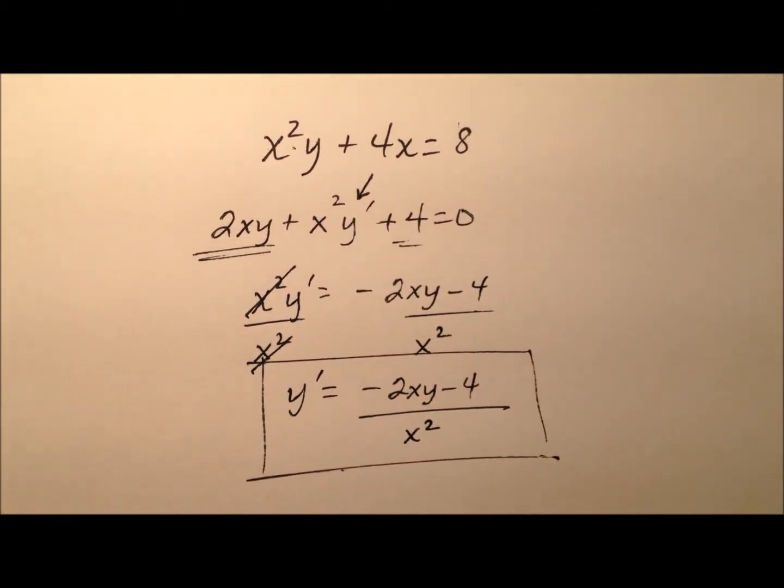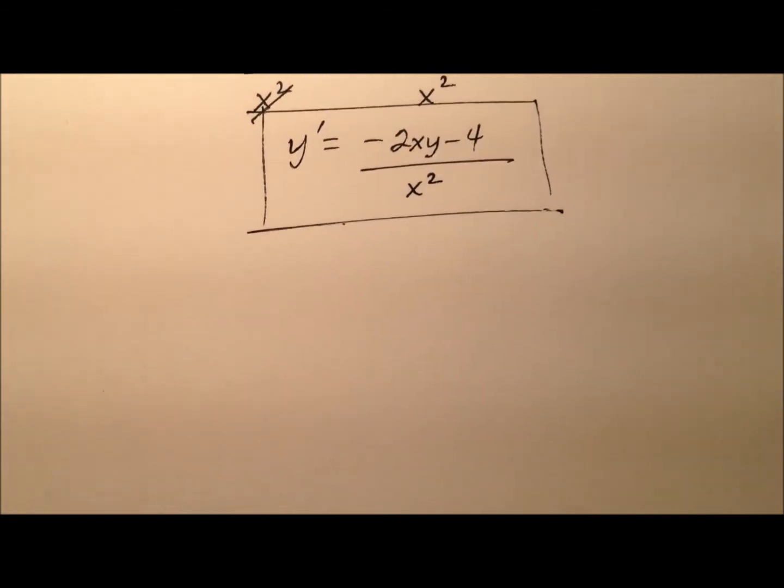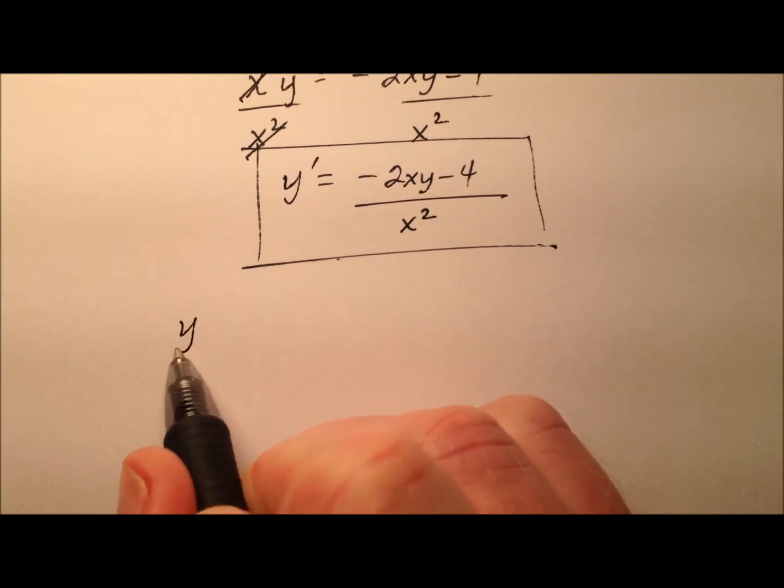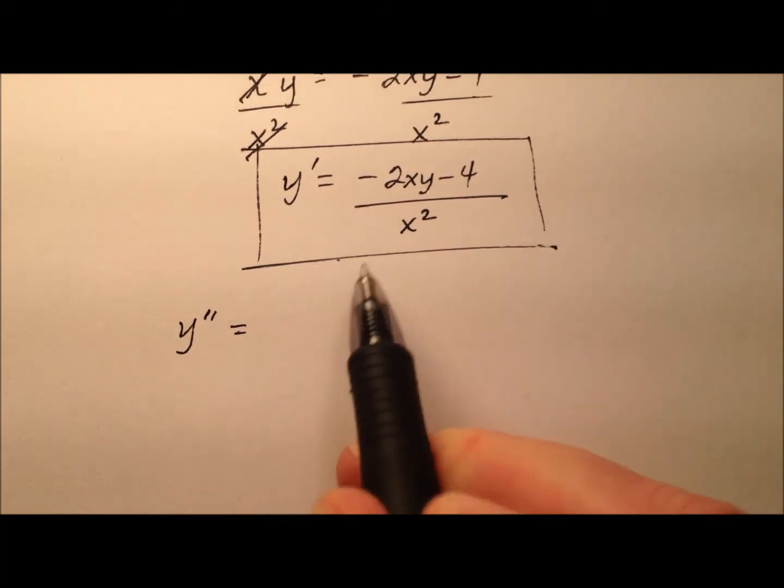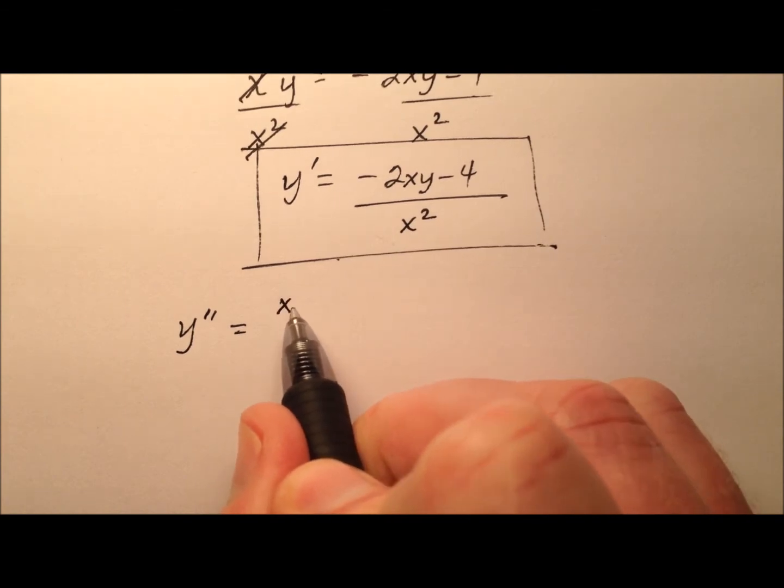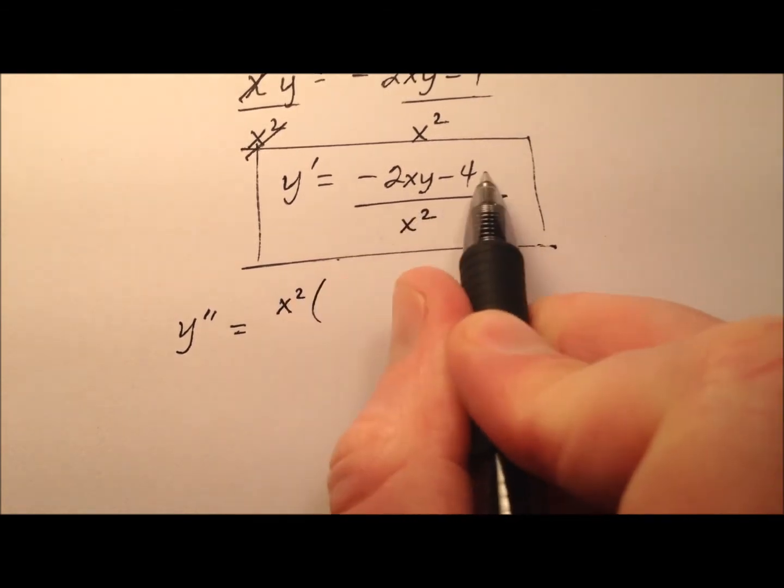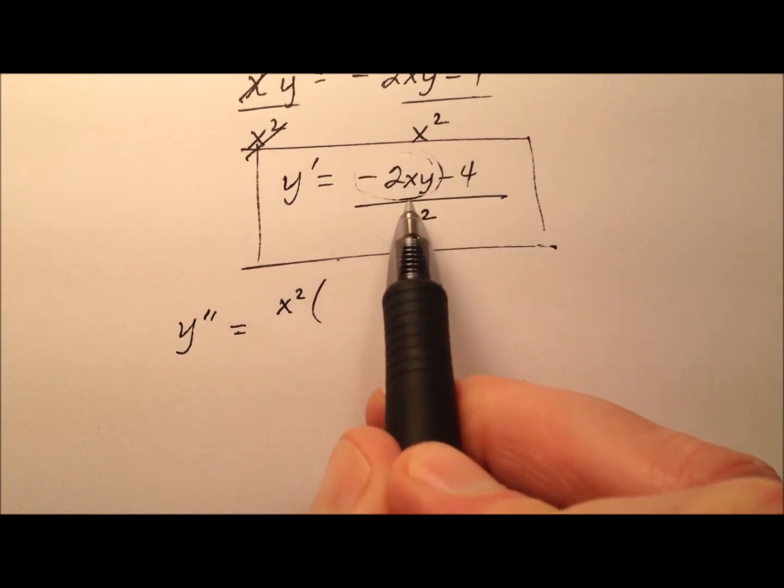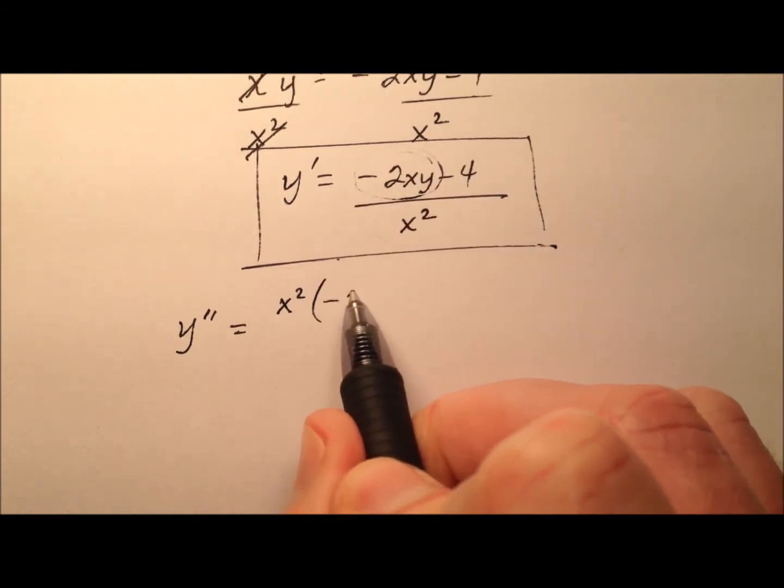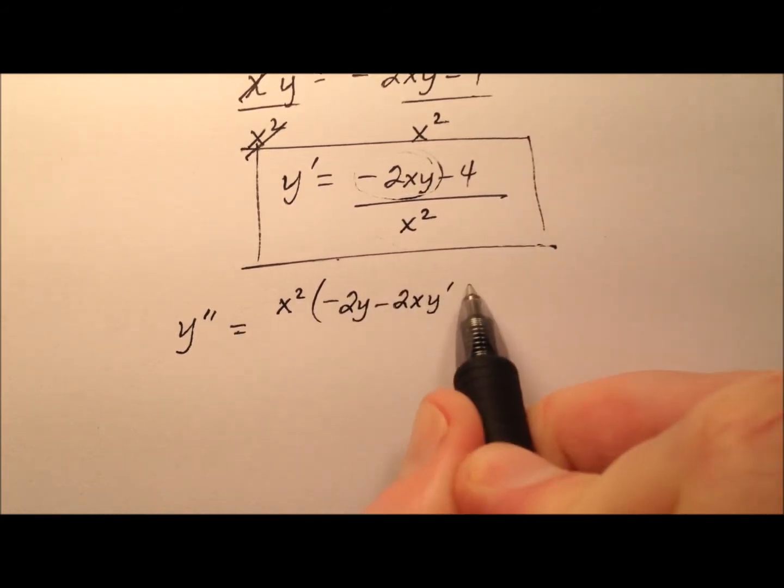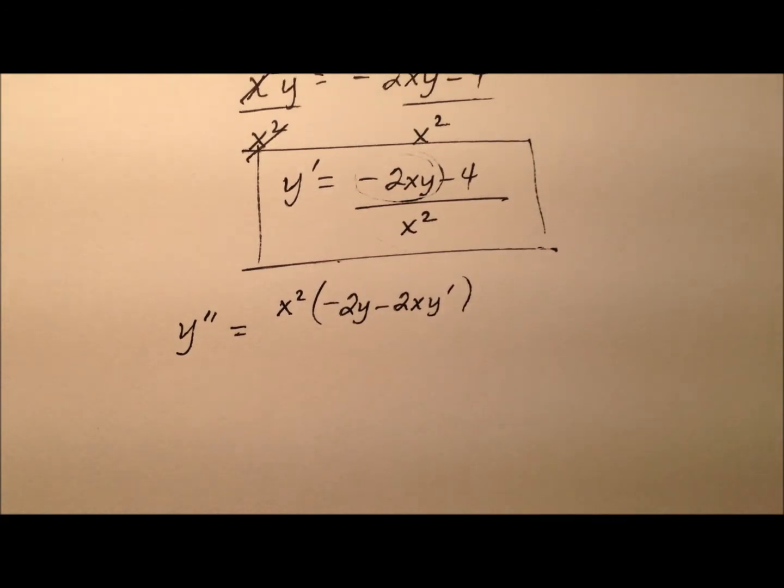So here's the first derivative. In order to find the second derivative we'll need to differentiate this. Y double prime equals, looks like we'll use the quotient rule here, so low d high. We'll take the denominator and multiply that through by the derivative of the numerator, which looks like we're going to use product rule again. So negative 2y minus 2xy prime. And then this constant when we differentiate that just goes to 0.